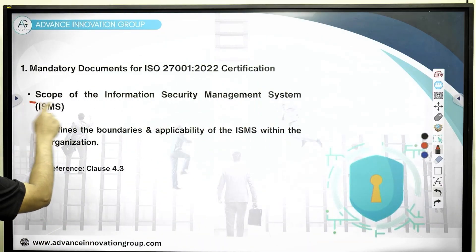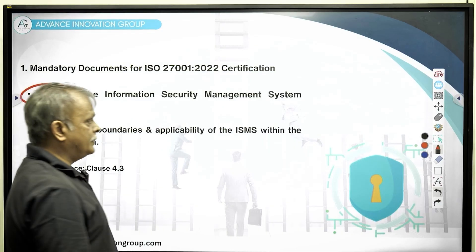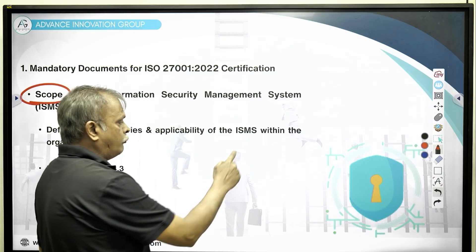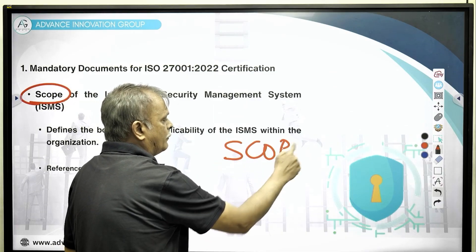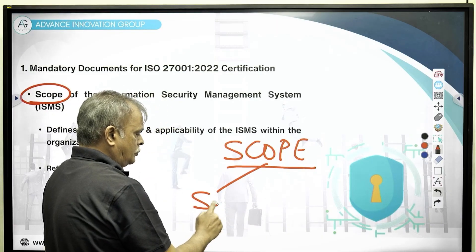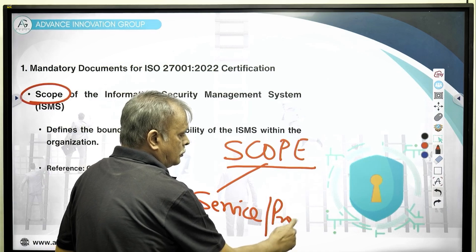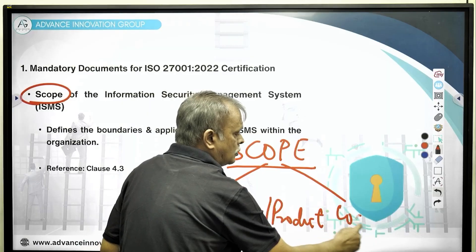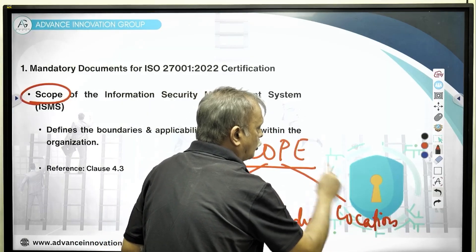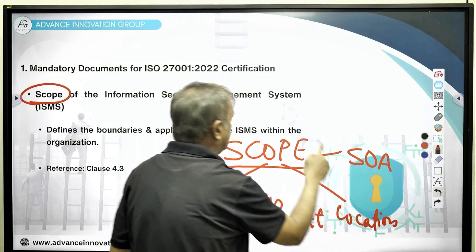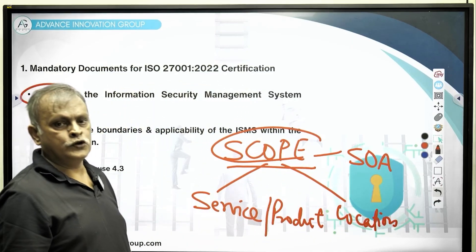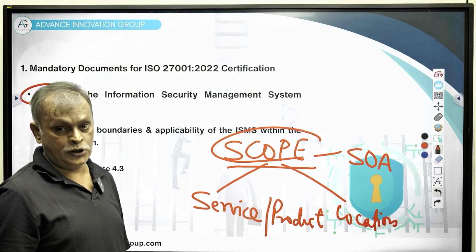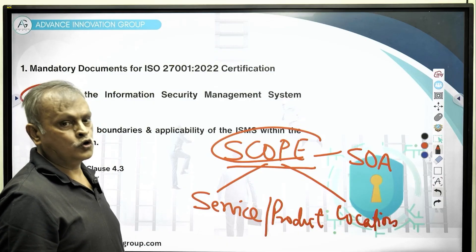Document number one is the scope. Please realize all ISO standards require a basic scope definition — meaning what service or product you offer as an organization, what are your physical locations, what is your SOA version number. All of this goes into a statement of scope, which then becomes part of your certificate that is issued to your organization. First and foremost is your scope document.